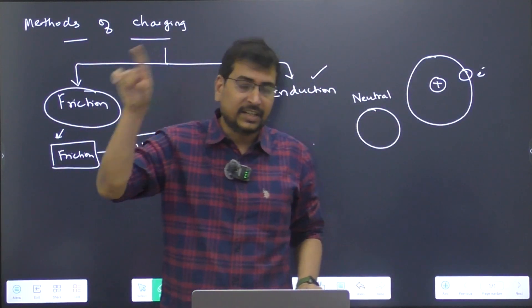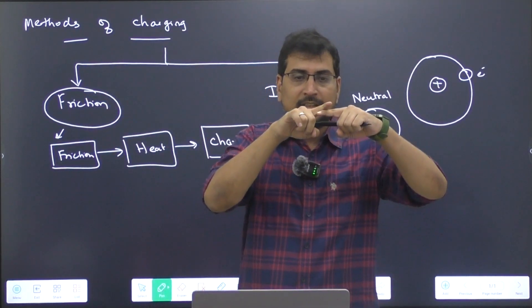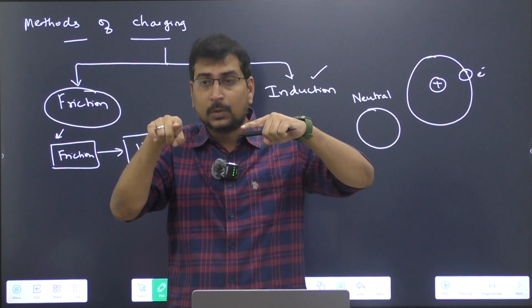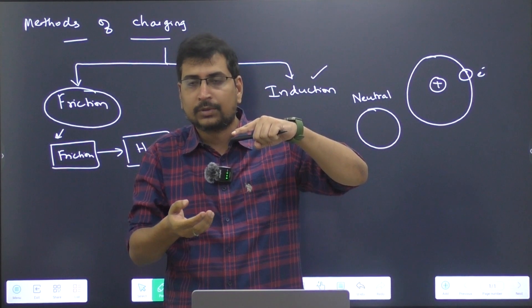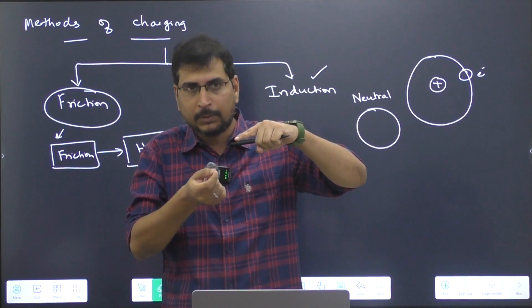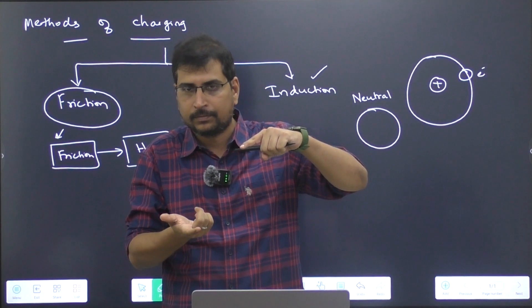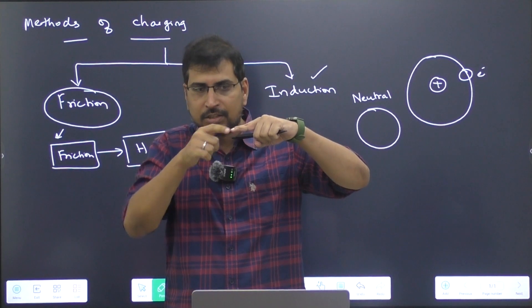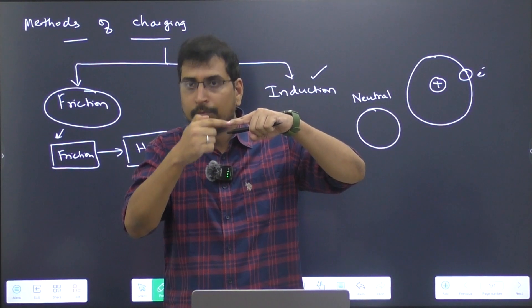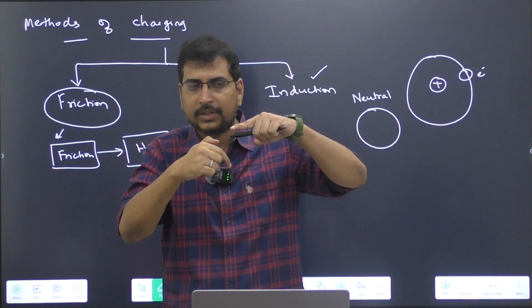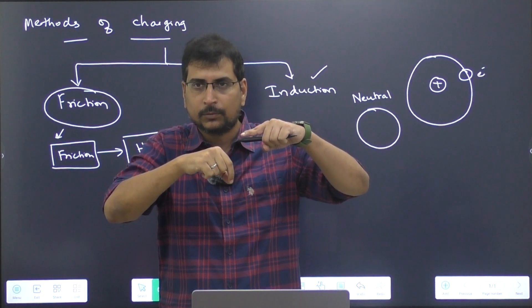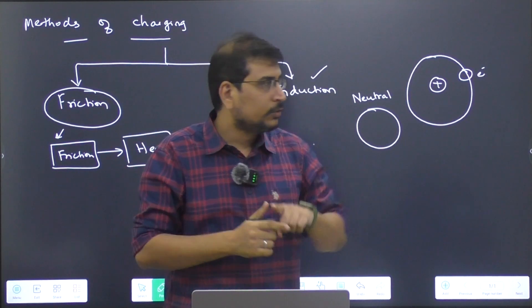If you observe from yesterday's activity that we did, we saw that the charge was created on the plate, but where did those materials come from? They came from the bottom. What happened actually? This charge created a field around it. Due to that field, there was a charge induced in the small aluminum ball.